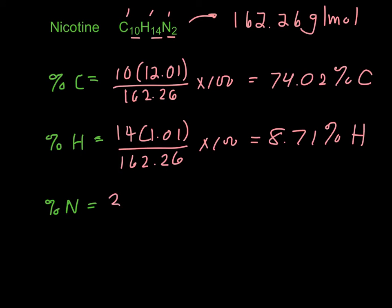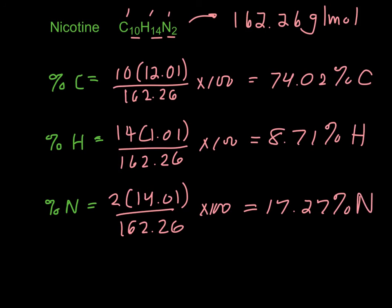You could just subtract those from 100 if you want to get the last one, but 2 times 14.01 divided by 162.26 times 100 is 17.27% N. And that's percent composition.